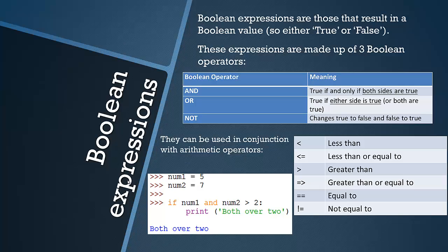Now this is more complicated, it uses the AND Boolean operator. I've got two variables, number one and number two. Number one is five, number two is seven. I'm asking the program if number one and number two are both greater than two, print both over two. And it does because they're both greater than two. Obviously they both have to be. If it was OR, for example we could do number one is one and number two is seven, and that would still result in the program successfully evaluating this.